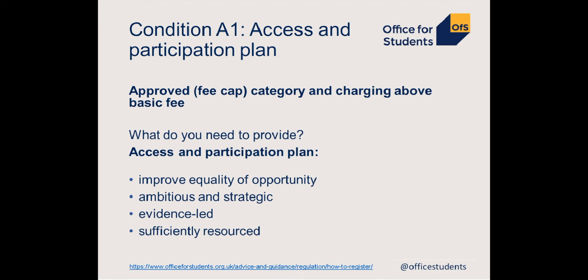The A conditions relate to access and participation. If you're applying in the Approved Fee Cap category and intend to charge fees above the basic amount, you will need to provide an access and participation plan. This is a document that sets out in detail how your provider will improve equality of opportunity for underrepresented groups to access, succeed in and progress from higher education. It needs to be ambitious, evidence-led, credible and sufficiently resourced. If you're a provider delivering higher education through a subcontractual arrangement, you do not need to produce your own plan, but your lead provider must name you in its own plan.